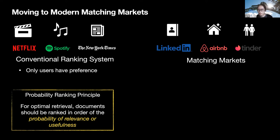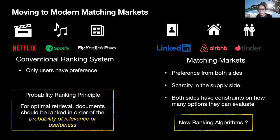What makes matching markets different from recommender systems is that in traditional recommenders — such as recommending news articles — only the users have preferences. However, in multi-sided matching market platforms such as LinkedIn, we recommend job candidates to employers; in Airbnb, we recommend hosts to guests; and in dating apps, we recommend people to people. The key difference is that in these more societal applications, we now have preferences from both sides.